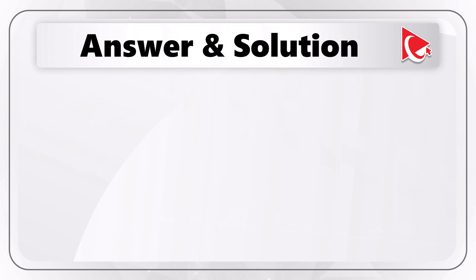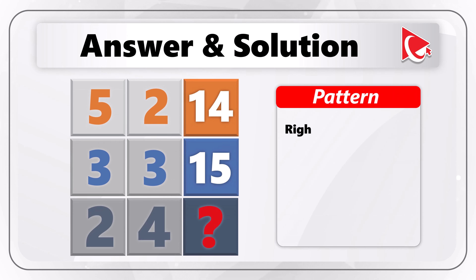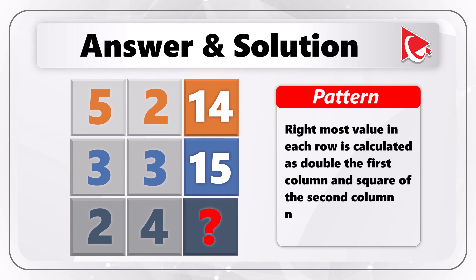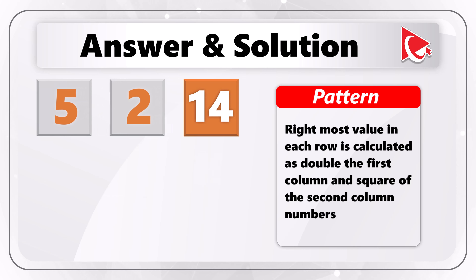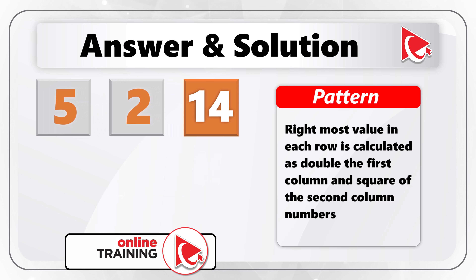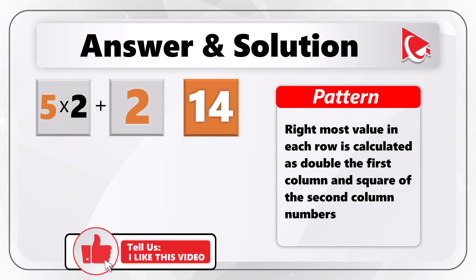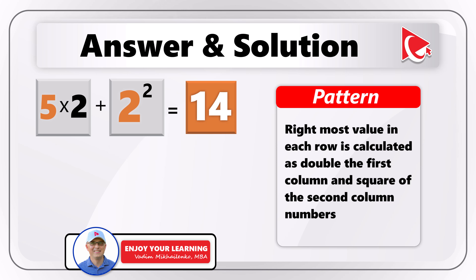I think the pattern here is that the rightmost value in each row is calculated as double the first column's value plus the square of the second column's number. For example, for the first row, the calculation is 5 multiplied by 2 plus 2 squared, which equals 10 plus 4, with an end result of 14.